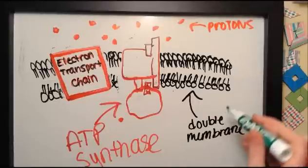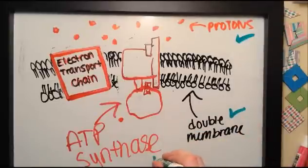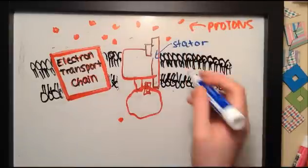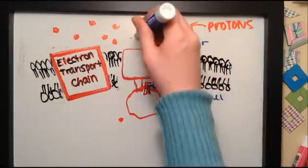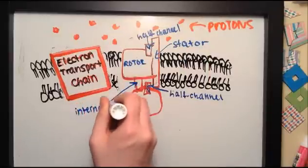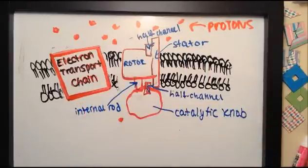Let's get back to chemiosmosis. We now have our double membrane, protons on one side, and ATP synthase. Here are some of the labels on ATP synthase: the stator, half channels, the rotor, the internal rod, and the catalytic knob.